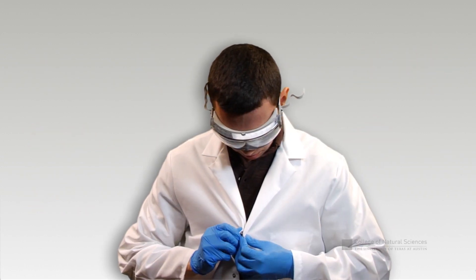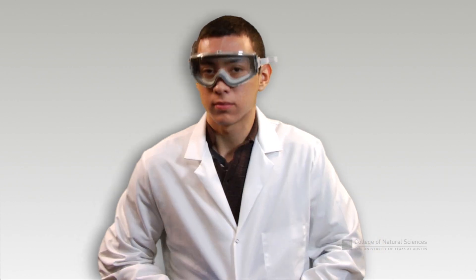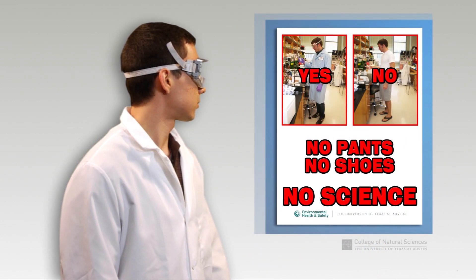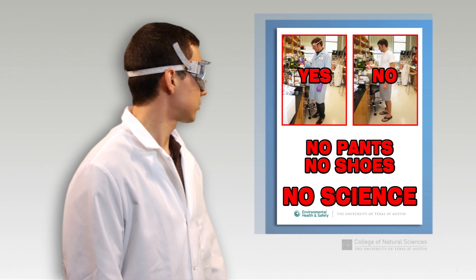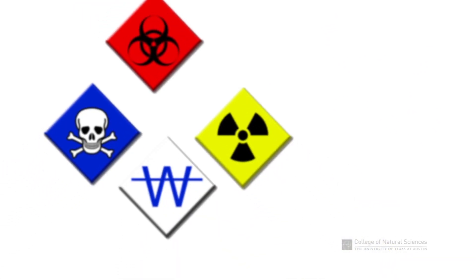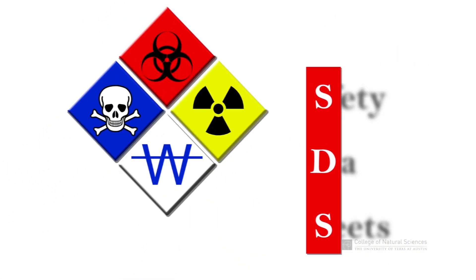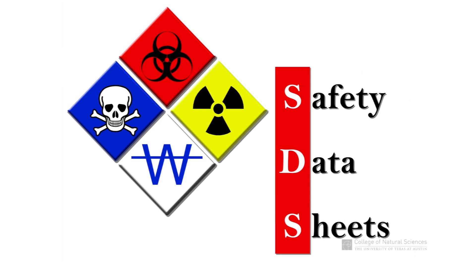Your first line of defense against lab accidents is prevention. By wearing proper PPE and abiding by laboratory rules, the risk of an accident or emergency can be greatly reduced. In addition, you should read the Safety Data Sheet, or SDS, for all compounds that you will be working with while in the laboratory.